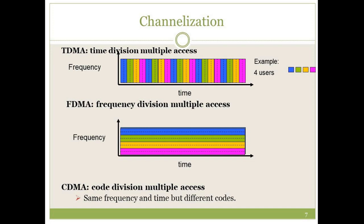Now we come to channelization. Channelization is a controlled access method where the channel is already distributed for each and every device in the system. There are three methods of channelization: one is based on time, one is based on frequency, and one is based on code. This is similar to a highway divided into four lanes, where each user uses a different lane. We divide the time or frequency among the users, and they use their different bands to communicate, so there is no interference. We will further discuss channelization in the next video lecture.